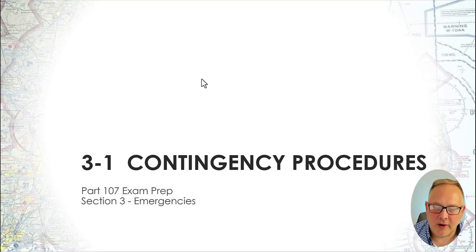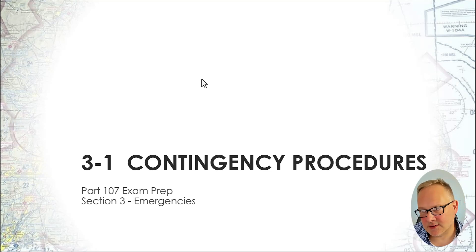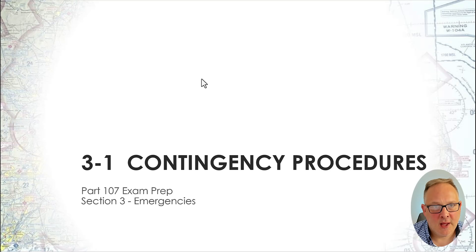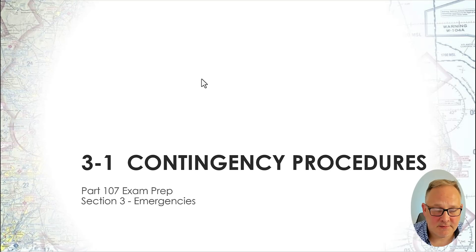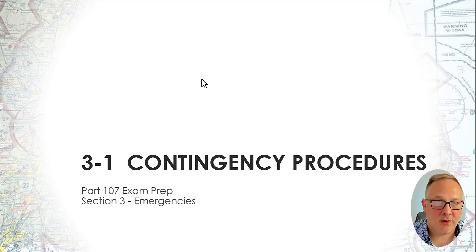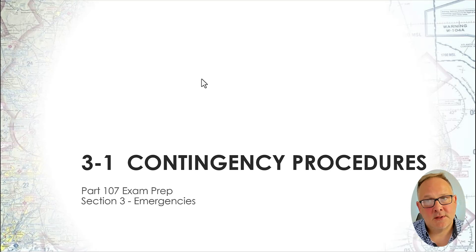Section 3 is all about emergencies. We're going to talk about contingency procedures, fires, loss of link, and flyaways. What do you do when you report an accident? There are FAA requirements that you must follow in certain situations. They will test you on this — they want to make sure that you are reporting the proper things, and not reporting things that you don't need to.